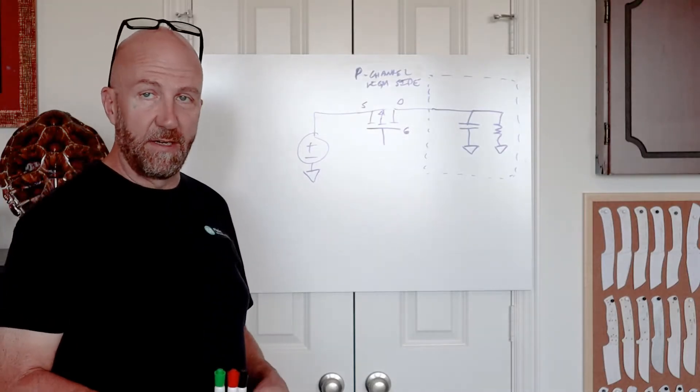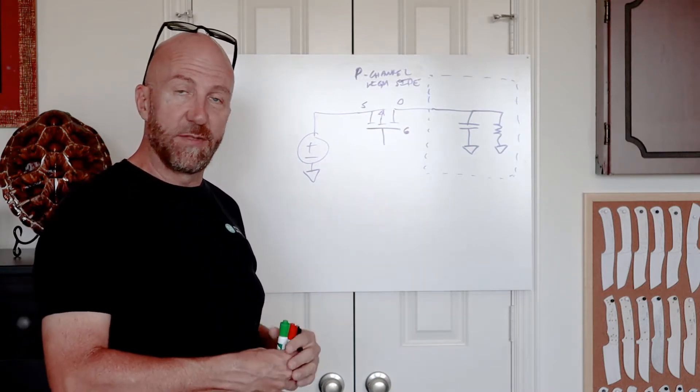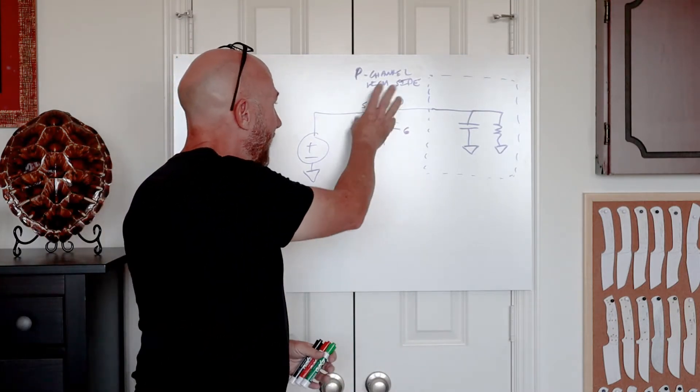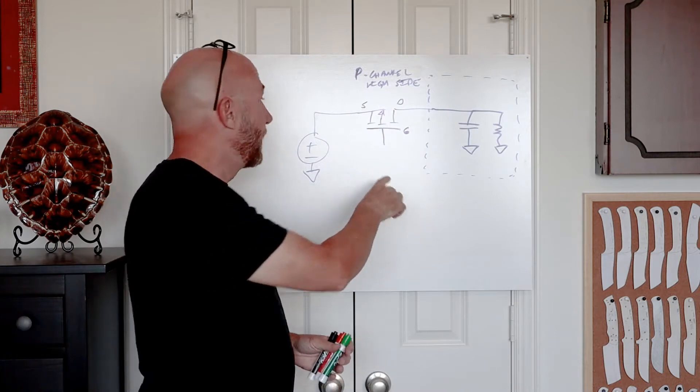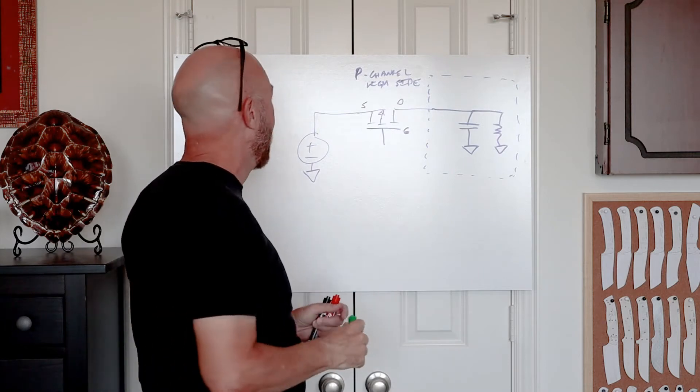Okay, so we talked about high-side n-channel hot swap, which is very common. Another thing that you'll see is high-side p-channel hot swap. And what we do is we replace the n-channel FET that we talked about earlier with a p-channel FET. And this has some advantages and some disadvantages compared to n-channel.